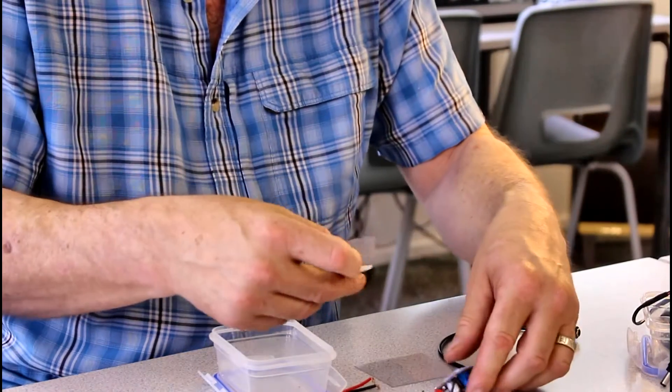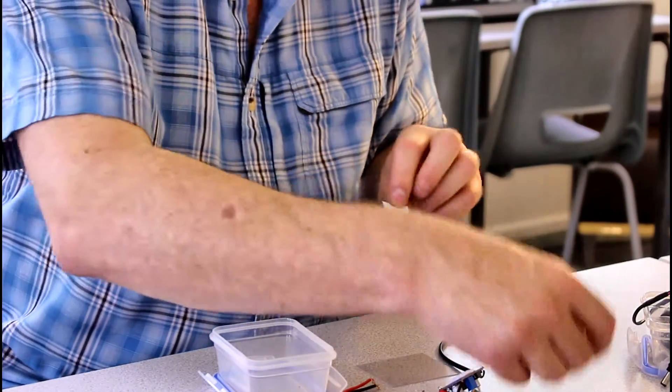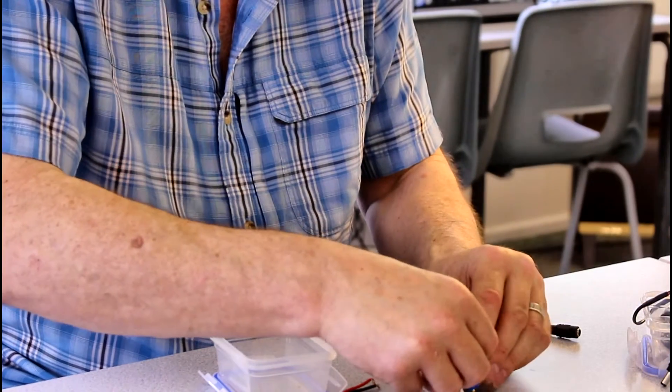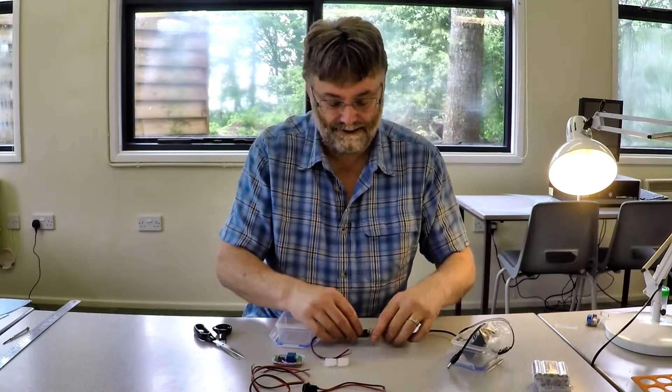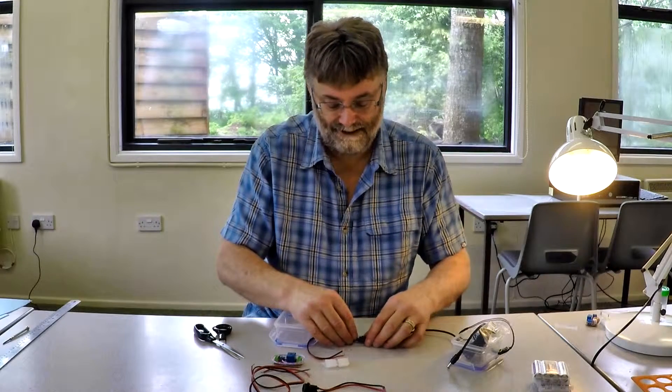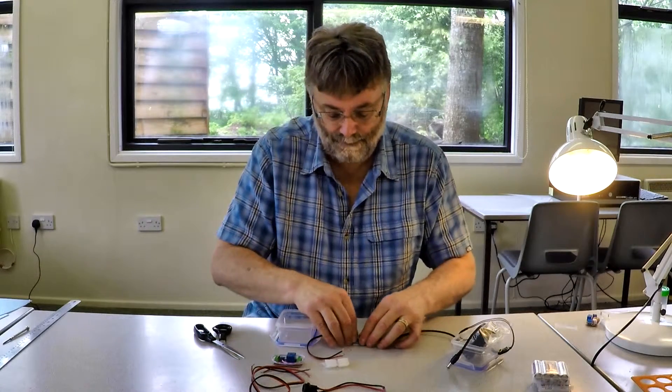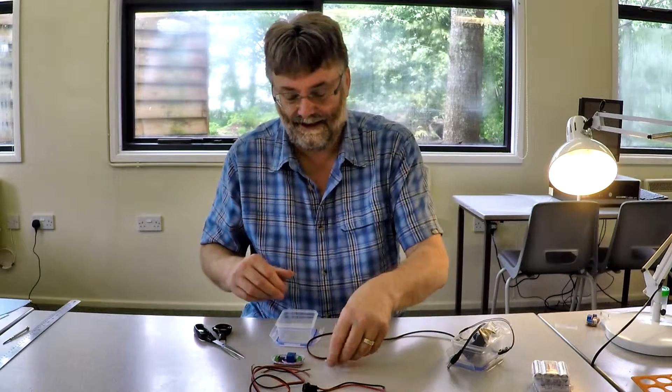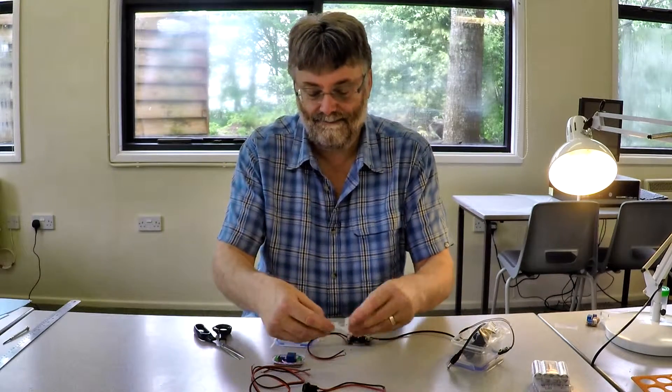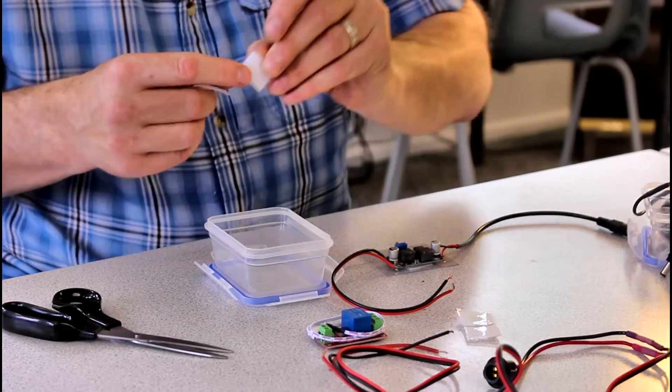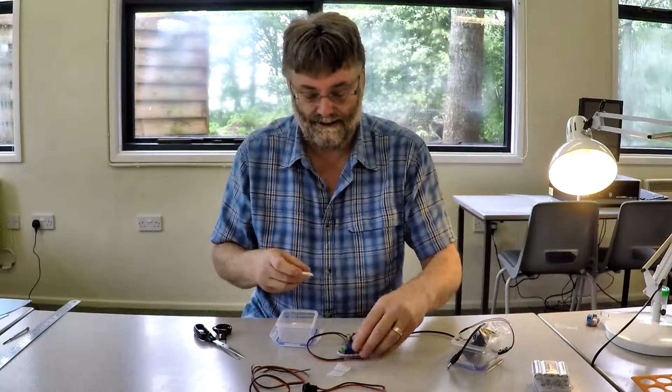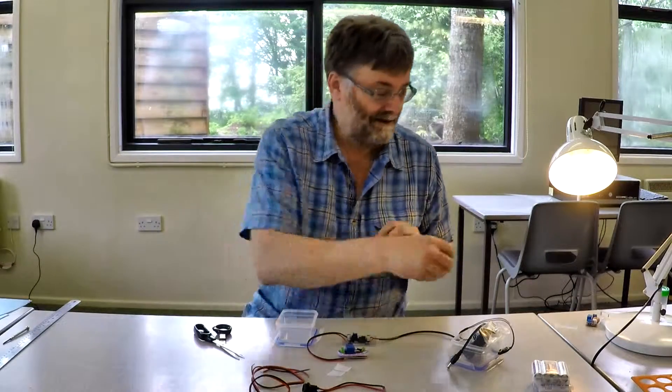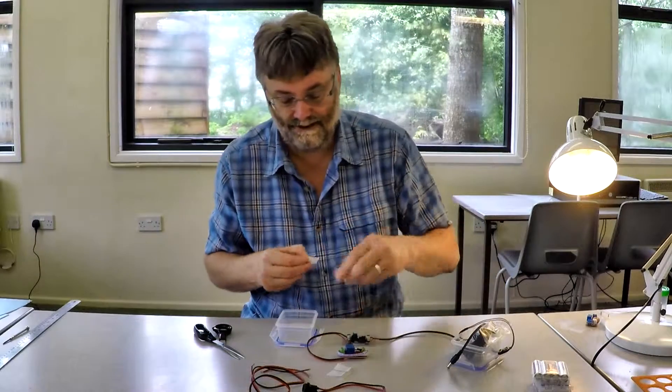Now, I know some engineers will be looking in horror at the idea of using Velcro to stick the circuit boards into position. But, this is not rocket science. It's a very cheap way to stick everything in position. And at the end of the day, it is only a moth trap. So, now we take the dawn-dusk sensor and we stick that in position.